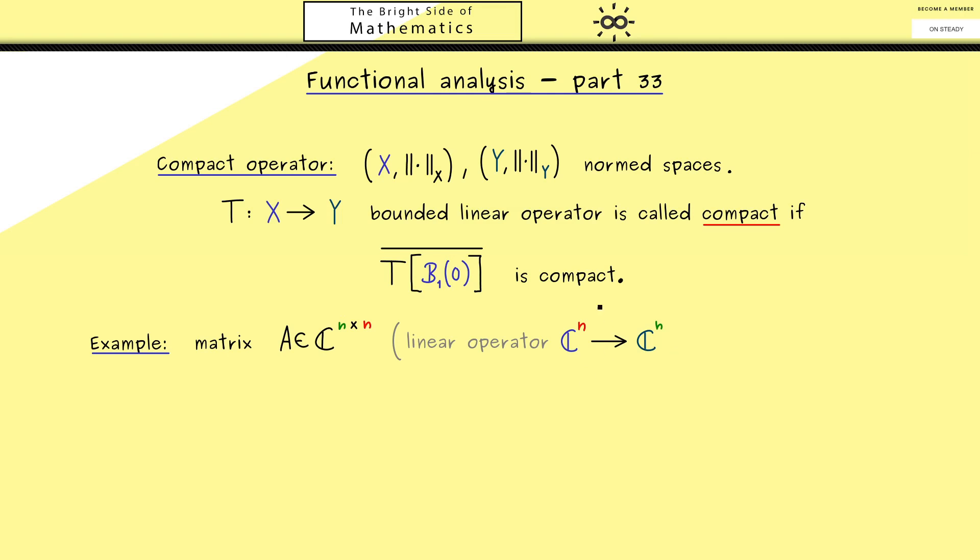However please don't forget such a matrix represents a linear operator from C^n into C^n. It simply works by taking a vector here and apply the matrix A from the left hand side. And then of course what we get is a well defined bounded linear operator. And indeed obviously it's also compact by the definition above.